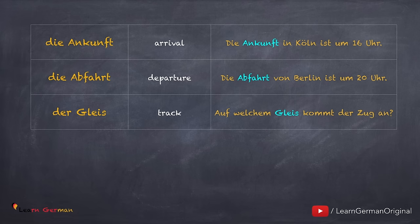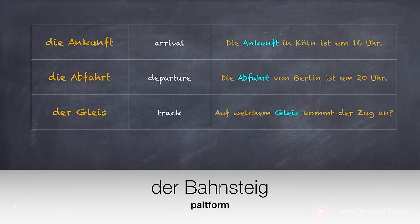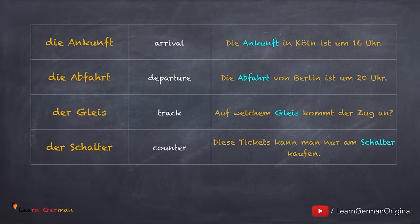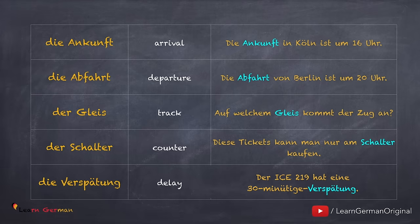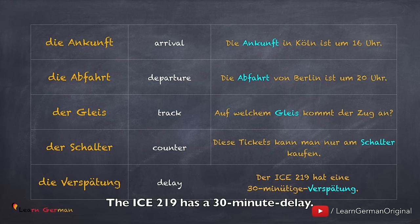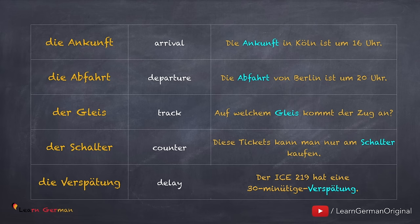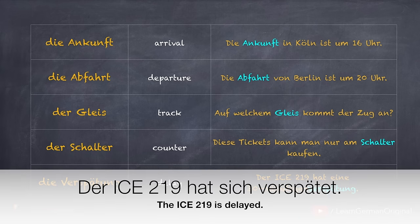In English you generally ask on which platform the train is arriving, but in German you use the word Gleis and not Bahnsteig. Der Schalter — diese Tickets kann man nur am Schalter kaufen. Die Verspätung — der ICE 219 hat eine 30-minütige Verspätung. If there is a delay in the train you will be hearing this noun or the verb very often in Germany. Der ICE 219 hat sich verspätet.